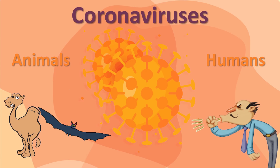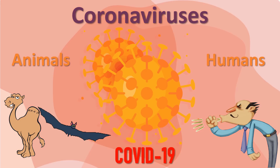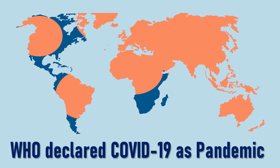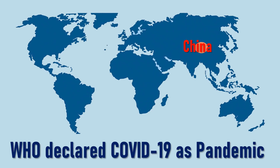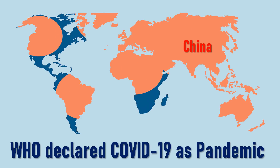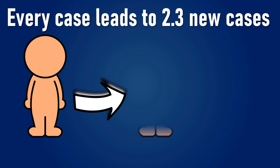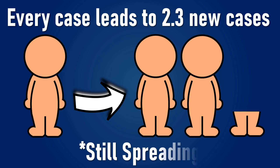A recently discovered coronavirus causes coronavirus disease, COVID-19. A coronavirus outbreak began in China but is rapidly spreading around the globe, and on March 11, the World Health Organization declared COVID-19 as a pandemic. Every case of COVID-19 leads to roughly 2.3 new cases, meaning the outbreak is still spreading.